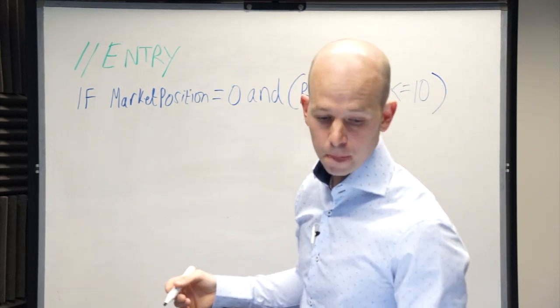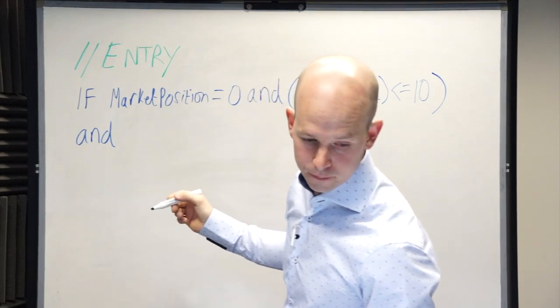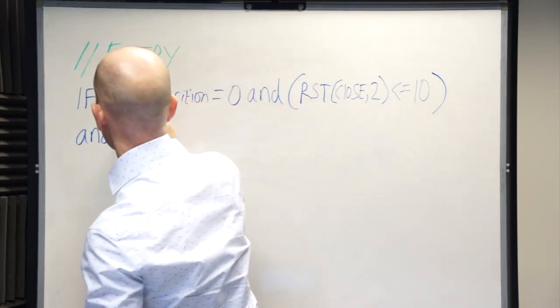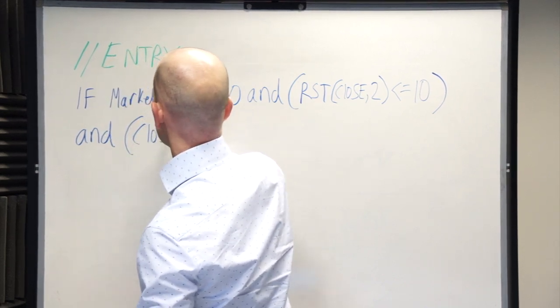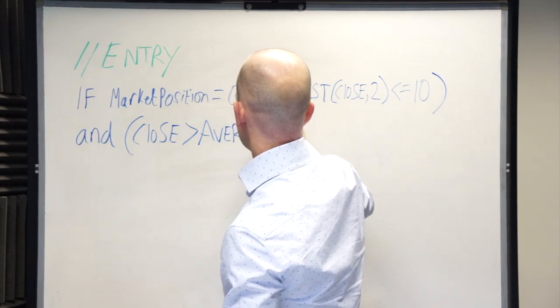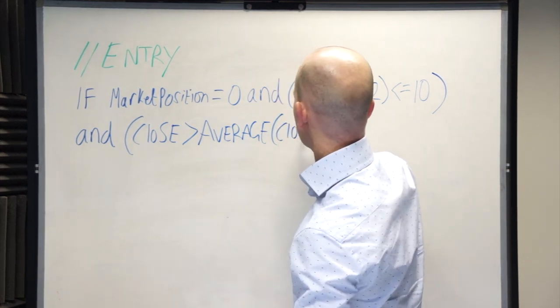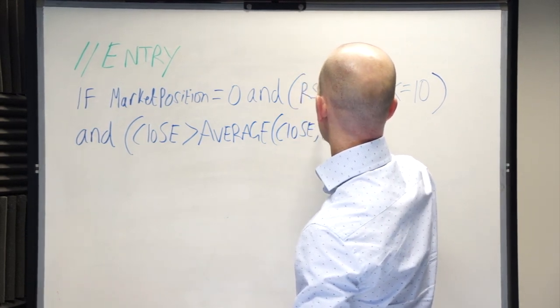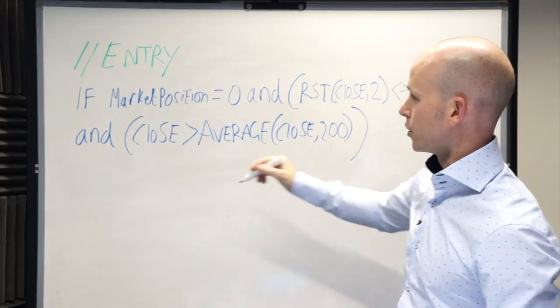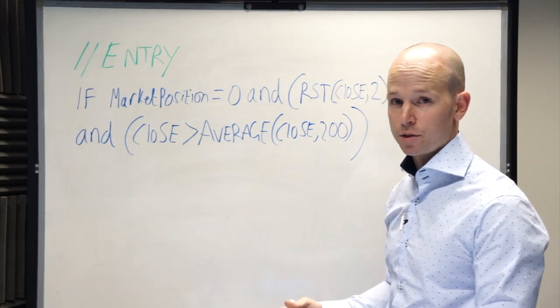Then we can go on to last condition, which is we need the close of the price is above the 200 period moving average. So, it's a bracket, the close is above the average, which is of the close, comma, 200 period. So there's our three conditions. Market position is zero, RSI drops below 10, and the close is above the 200 period moving average. Then we're good to go. Then we want to buy at the close.